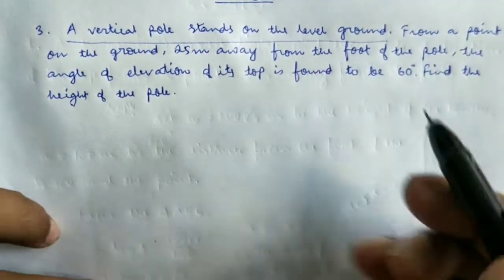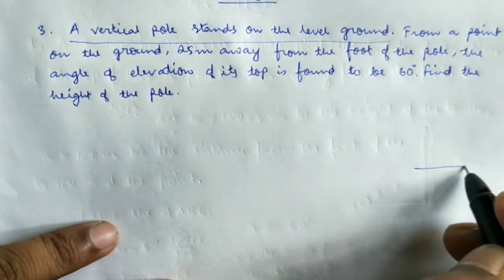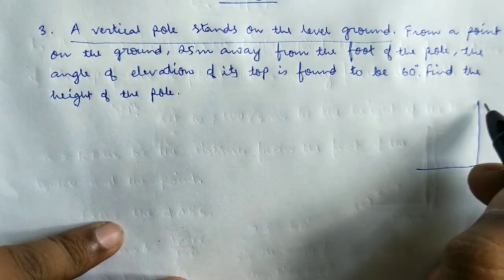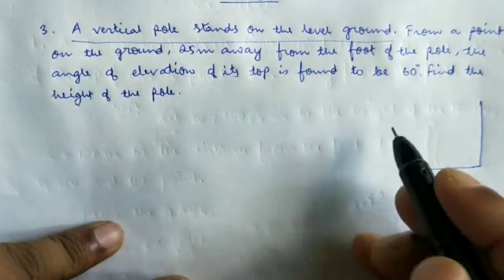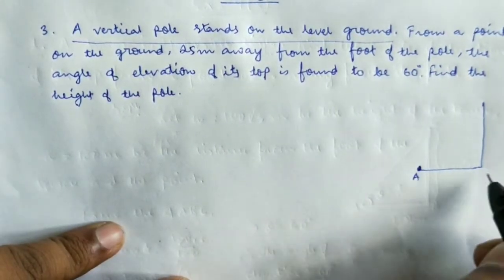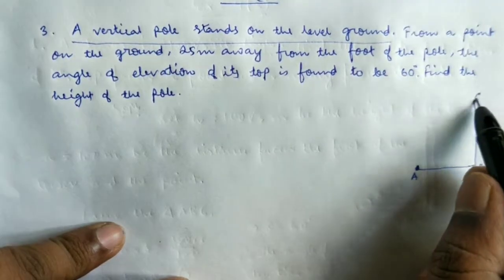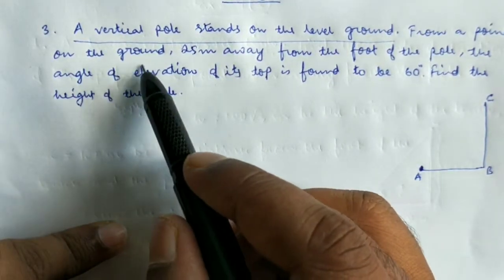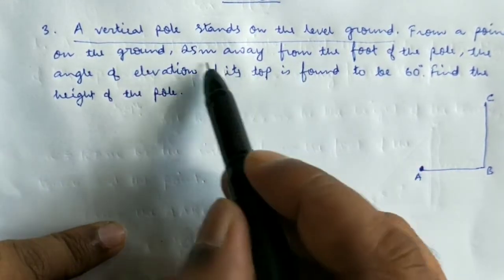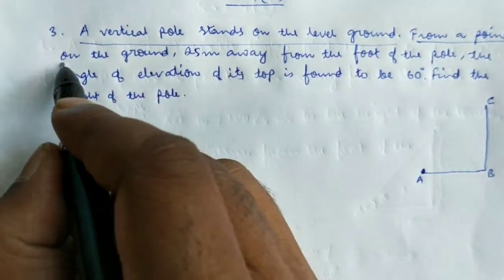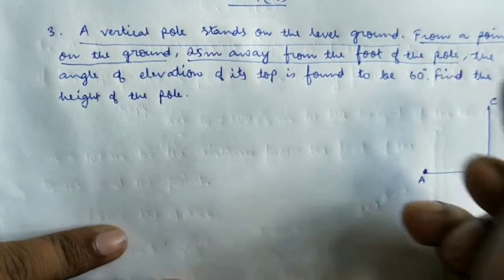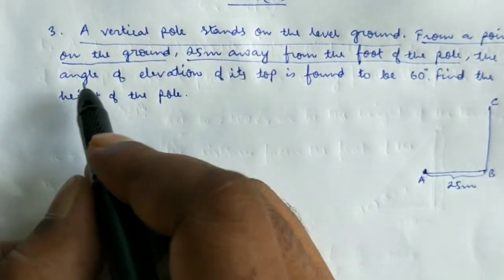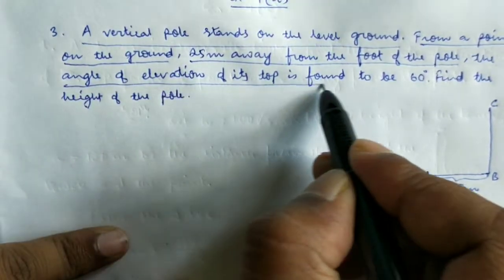Since a vertical pole stands on the level ground, we have a level ground with a pole standing vertically on it. There is a point on the ground — marked as point A — which is 25 meters away from the foot of the pole. So AB equals 25 meters, where B is the foot of the pole.